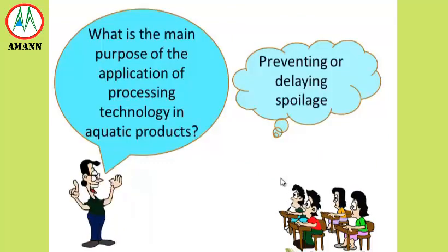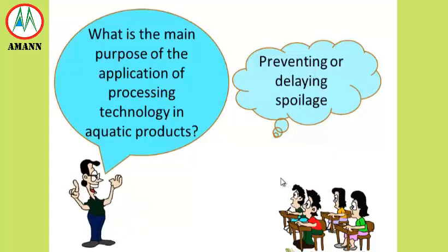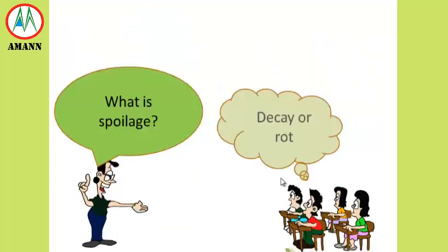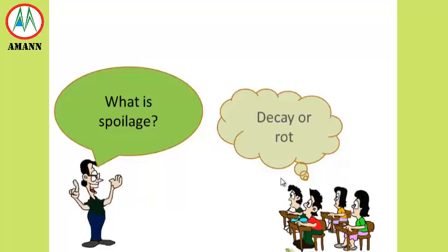The main purpose of the application of processing technology in aquatic products is to delay and/or prevent spoilage. Spoilage is the process by which fish is rotten or decayed and no longer fit for human consumption.